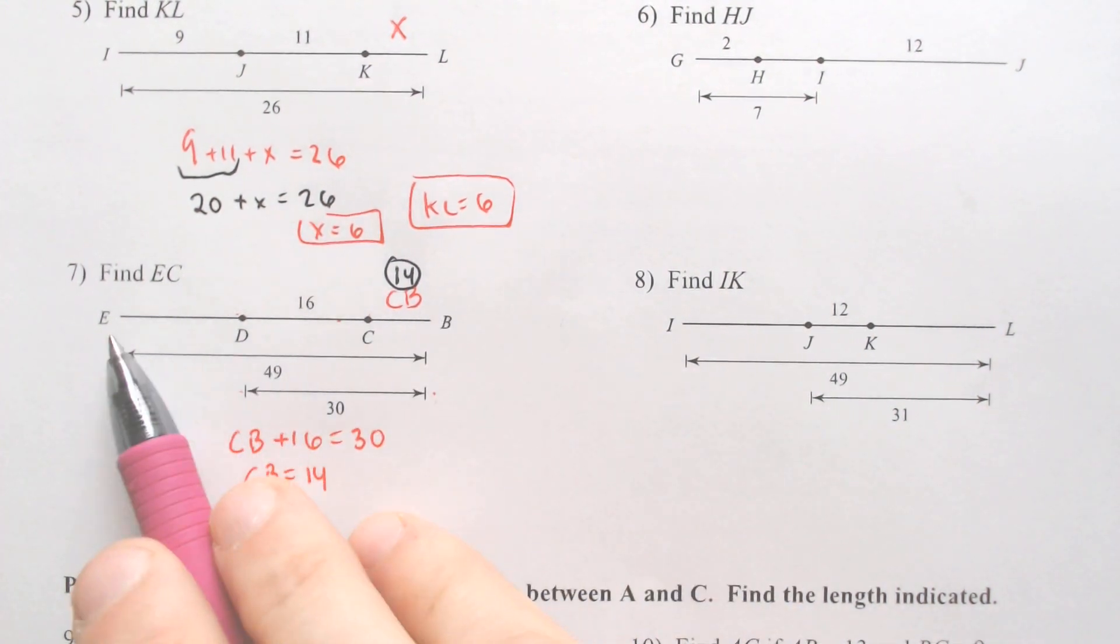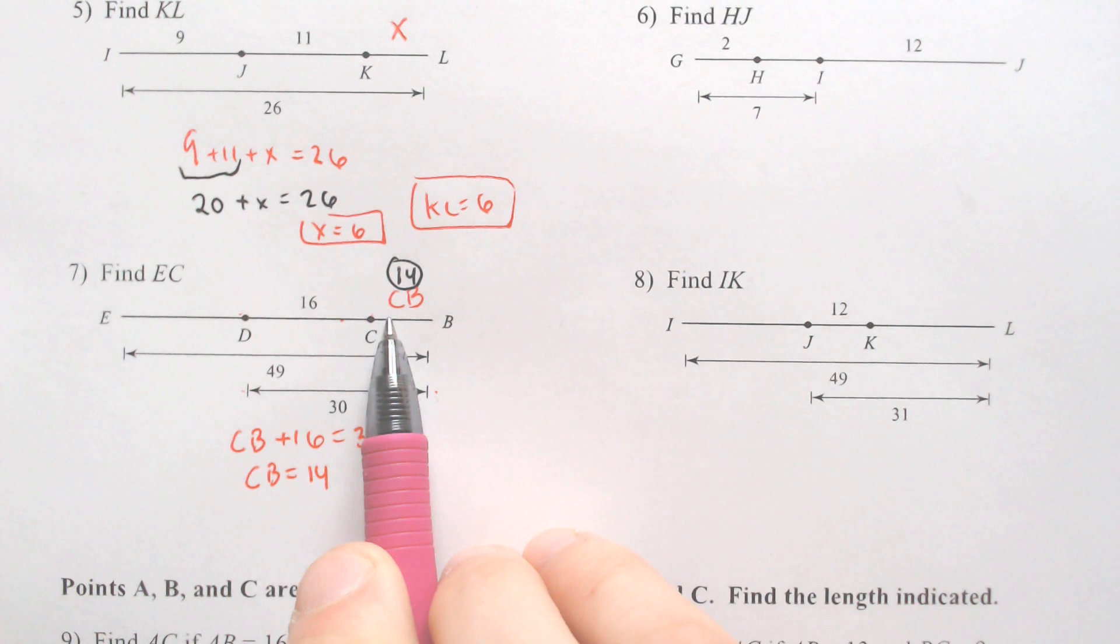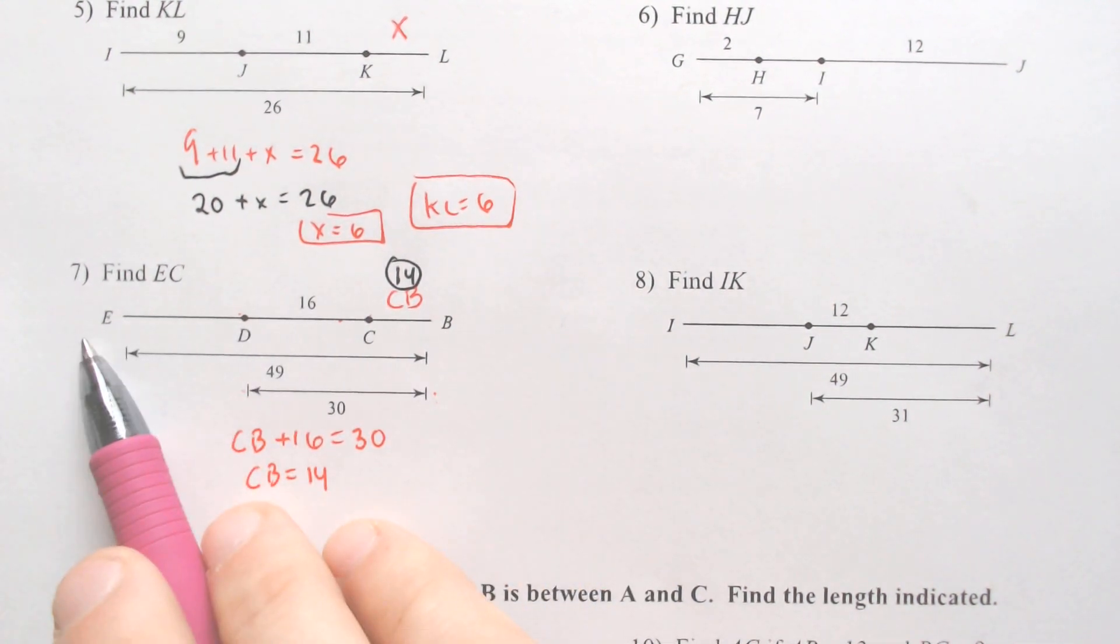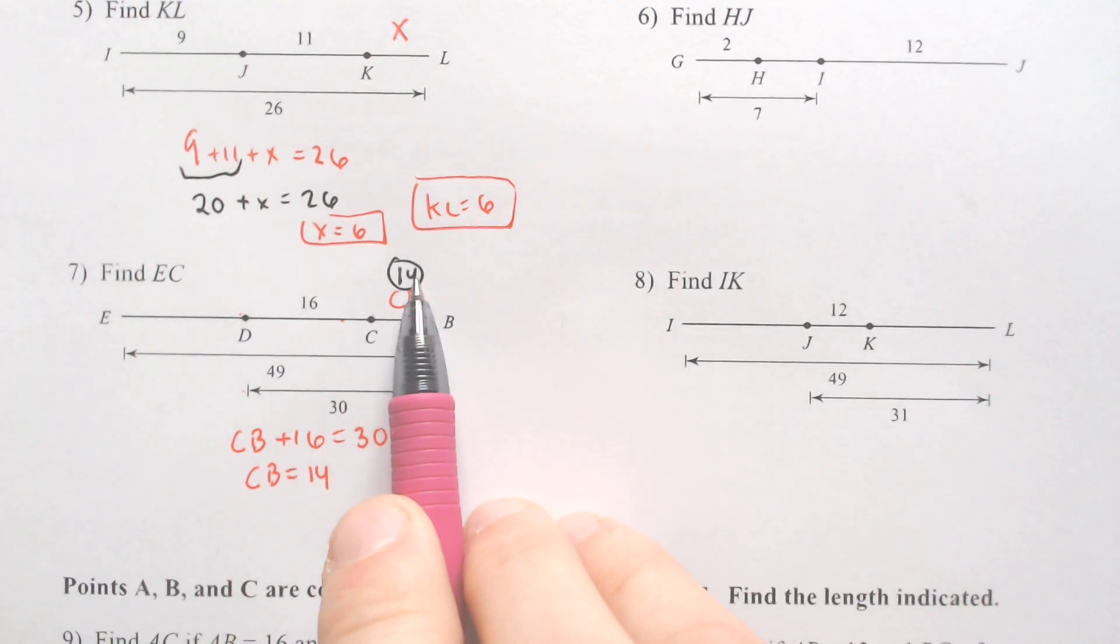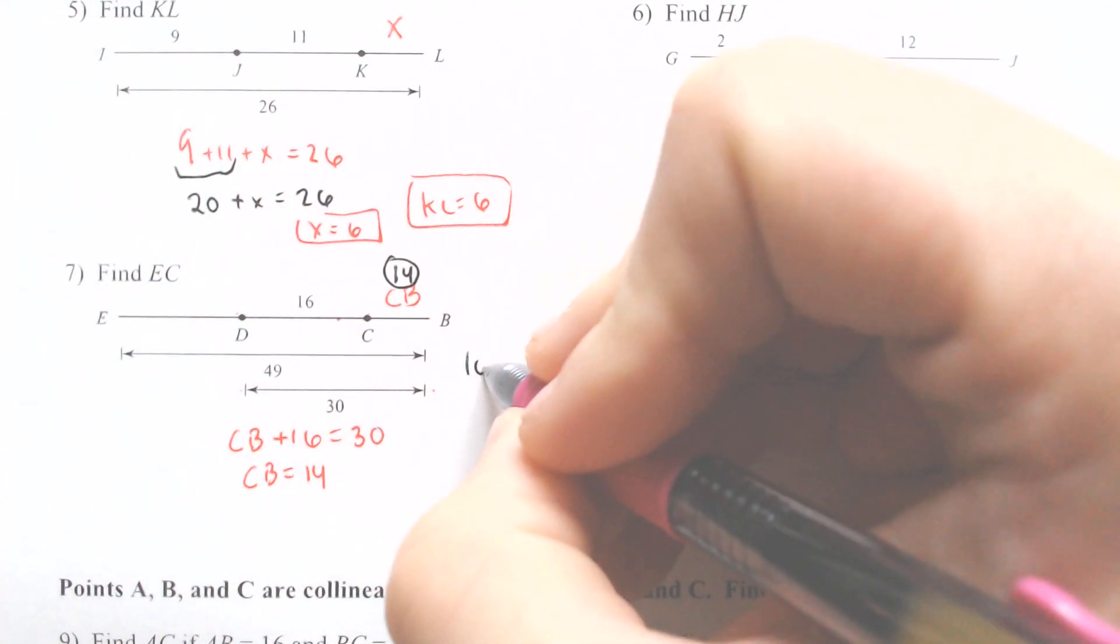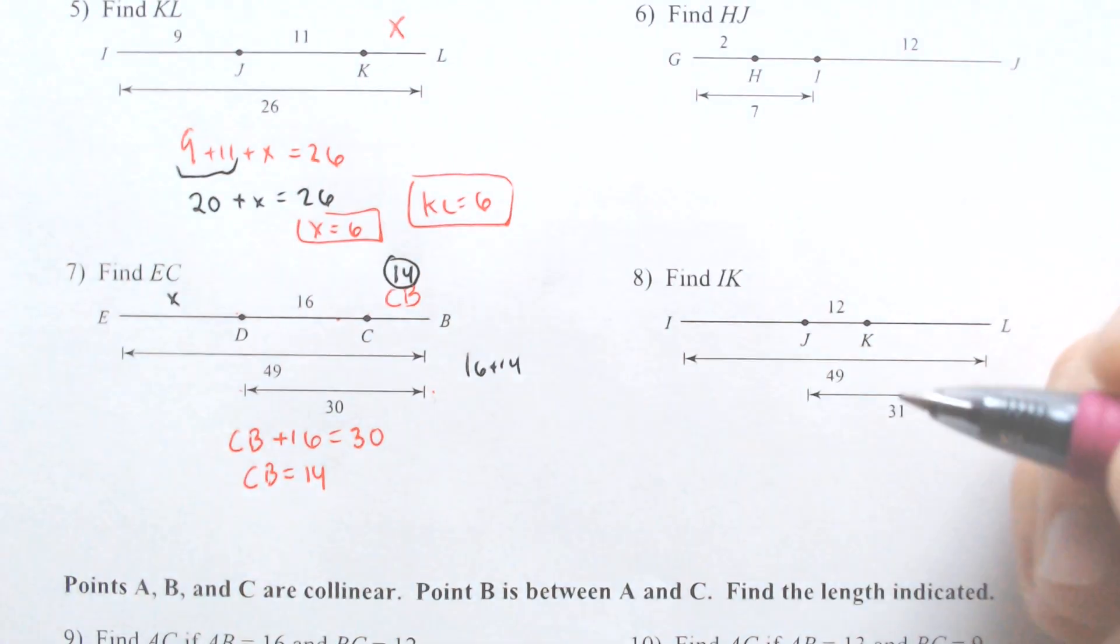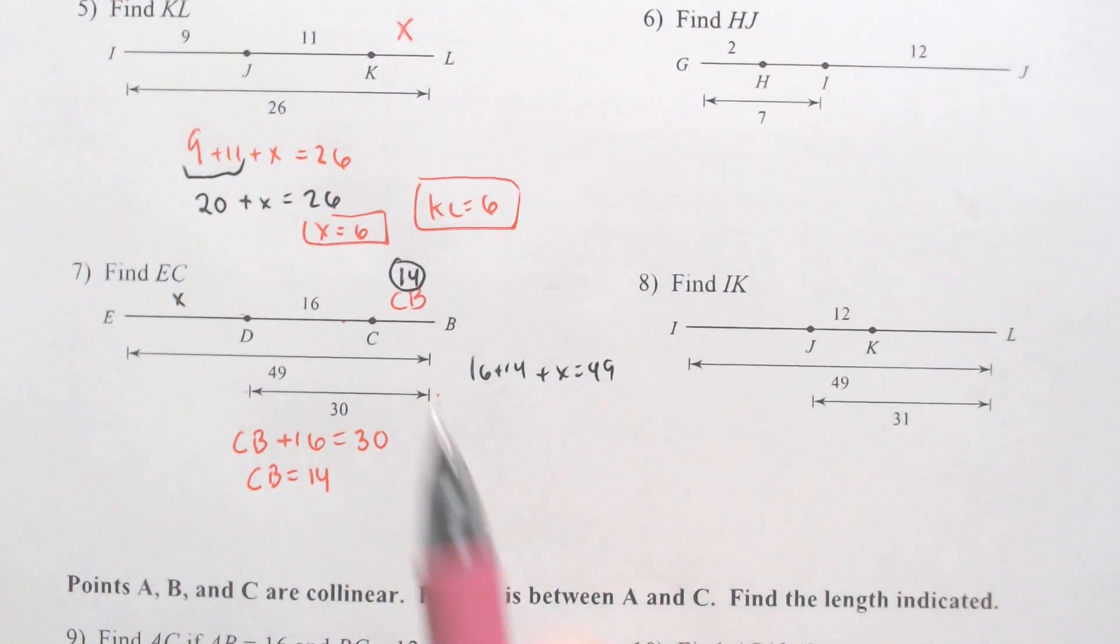So if we know that this is 14, now we have a little bit more information that we can figure out what E to C is eventually because we need to now figure out what E to D is. We got 16 here, and we got 14 there. You could set up an equation where you can go 16 plus 14 plus X equals 49.